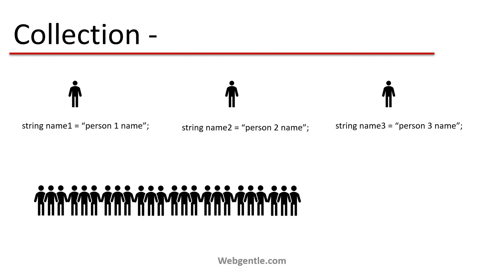The alternate solution is collection. Basically we will do an assignment just like the previous example, but the type of the variable will be something special — when we learn about collections we will replace that 'something' with specific keywords. We create one variable and assign all the names of all the persons to that single variable, which is much easier compared to creating multiple variables.